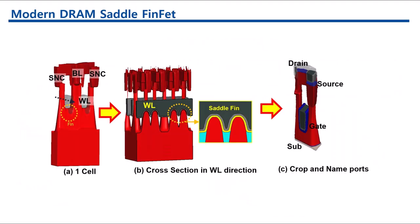2. Optimize access transistor performance. The access transistor should have minimal leakage to reduce power consumption and heat generation. At the same time, it should have a high on-current capability to ensure reliable performance while keeping the area compact. This balance is crucial for high-density DRAM applications.